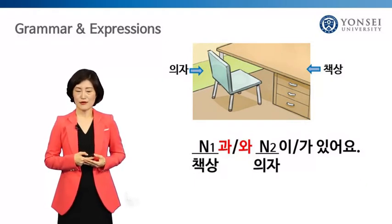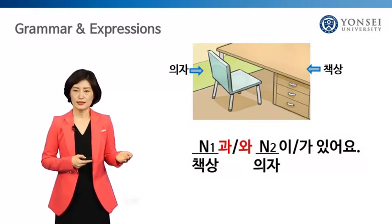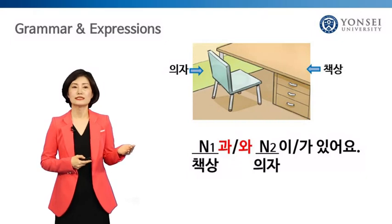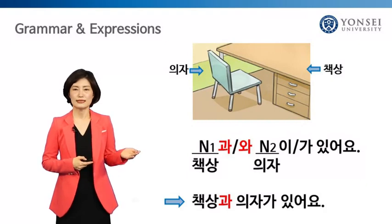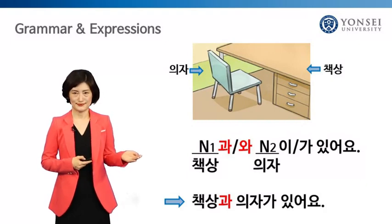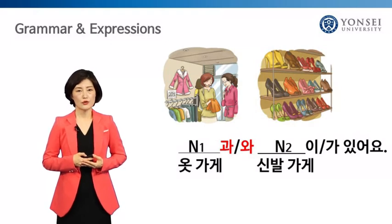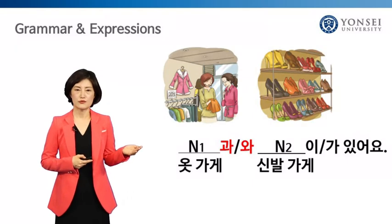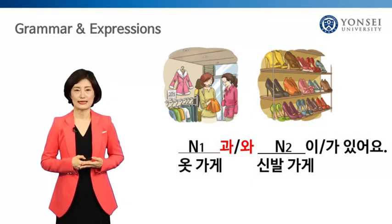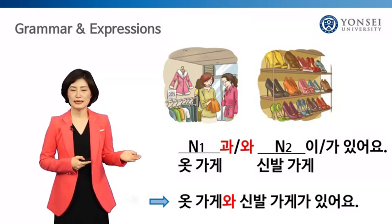Let's say there is a desk and a chair in the classroom. The word 책상 ends with a consonant, so use 과 after 책상. The correct sentence is 책상과 의자가 있어요. Now let's say there is a clothing store and a shoe store at the market. The word 옷가게 ends with a vowel, so use 와 after 옷가게. Altogether, it's 옷가게와 신발가게가 있어요.